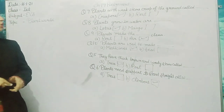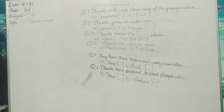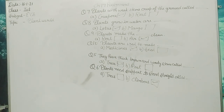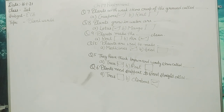Assignment: what we have to do — write down the questions. Question 6: Plants need support to stand, called — climbers. Question 7: Plants with weak stems creep on the ground, called — creepers. Plants grow in water — lotus. Plants make the air clean — air. Plants are used to make medicines — medicines. Ok.